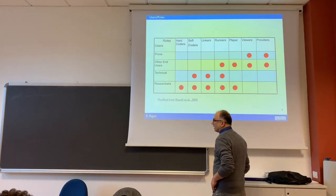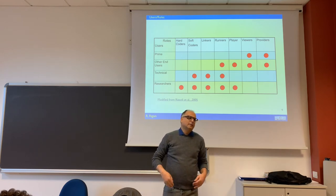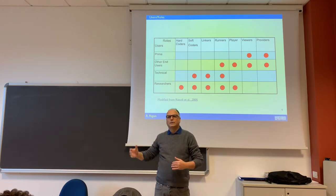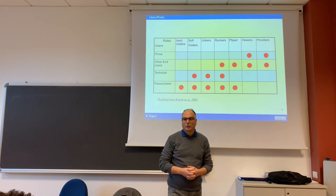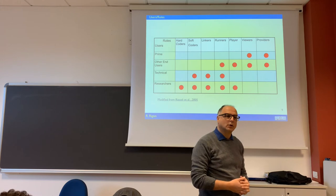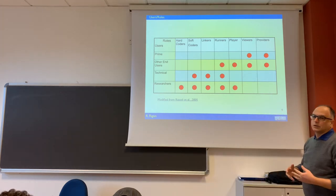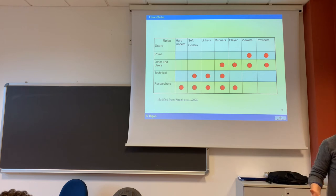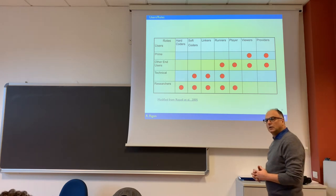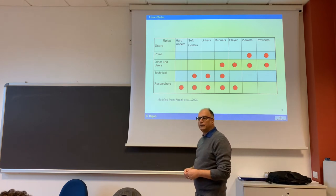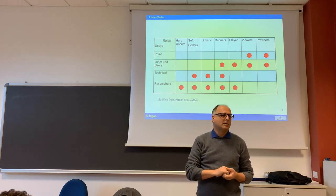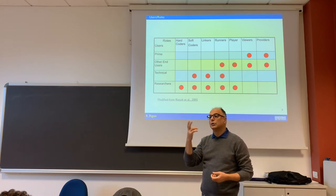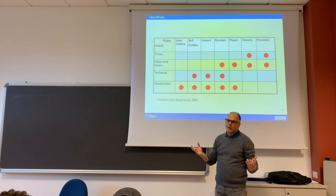Then we have other end users. Technical users do professional work and work in institutions — their goals are not the same as researchers. Other end users are politicians, policy makers. You want to do a model because some policy maker has to prioritize policies in a certain area. Models can be used for that. Sometimes policies are done just on intuition, but intuition fails more than models.